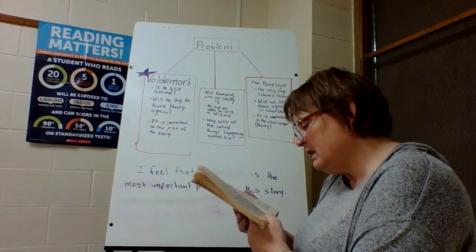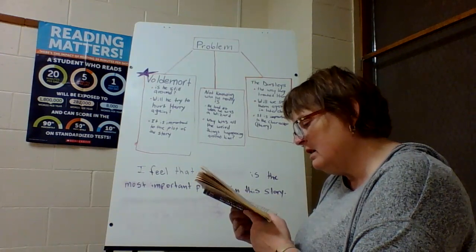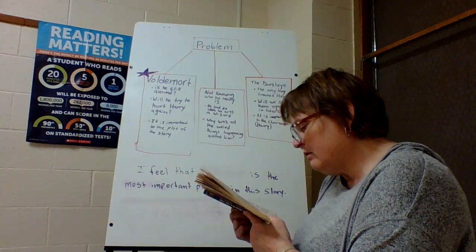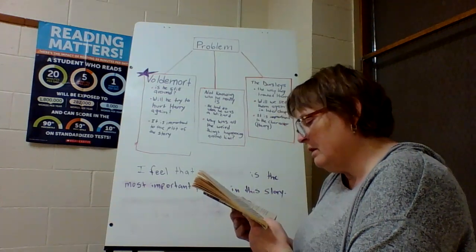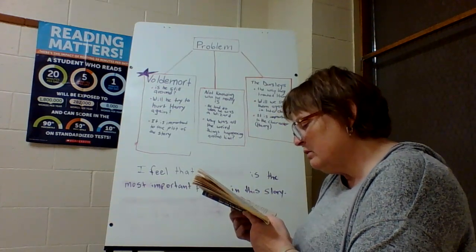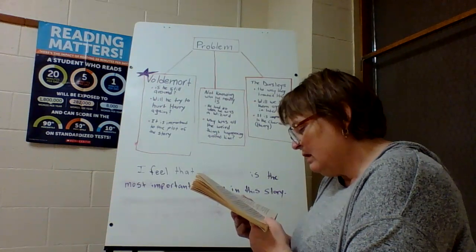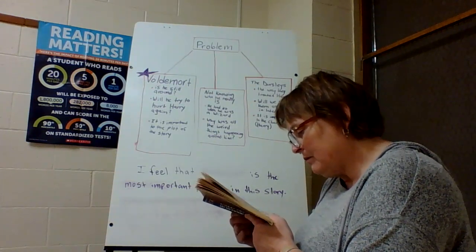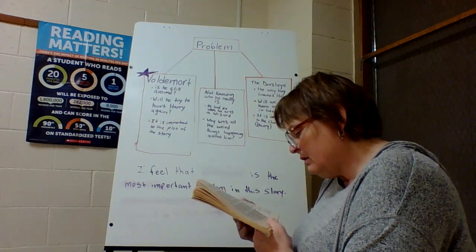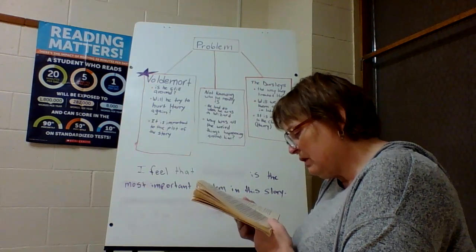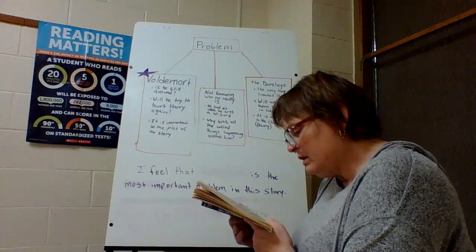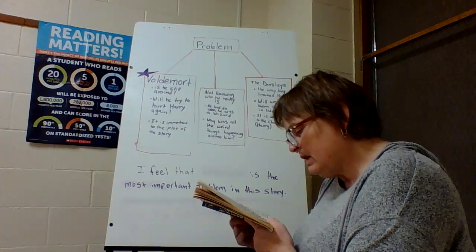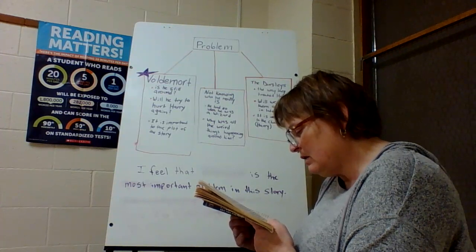'If anybody but a Gringotts goblin had tried, they would be sucked through the door and trapped in there,' said Griphook. 'How often do you check to see if anyone's inside?' Harry asked. 'About every ten years,' said Griphook, with a rather nasty grin. Something really extraordinary had to be inside this top security vault. Harry leaned forward eagerly, expecting to see fabulous jewels at the very least. But at first he thought it was empty. Then he noticed a grubby little package wrapped in brown paper lying on the floor. Hagrid picked it up and tucked it inside his coat. Harry longed to know what it was but knew better than to ask.